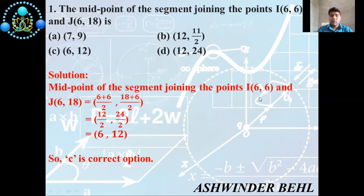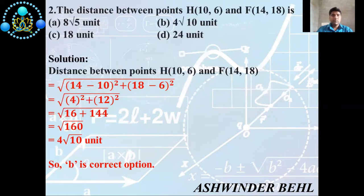The midpoint equals (6 + 6)/2 and (18 + 6)/2. So 6 + 6 = 12, divided by 2 gives 6, and 18 + 6 = 24, divided by 2 gives 12. So the midpoint is (6, 12), and option C is the correct answer.